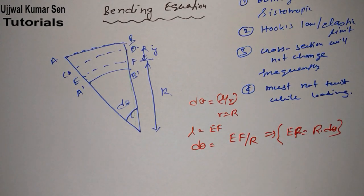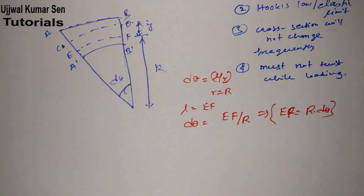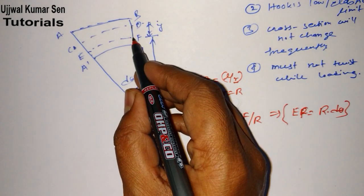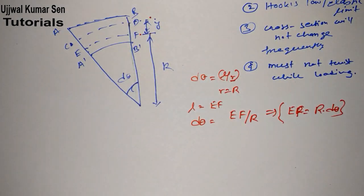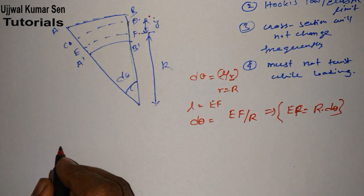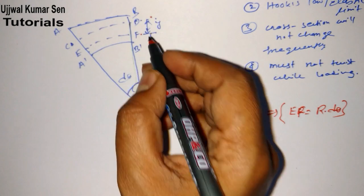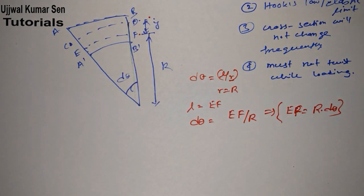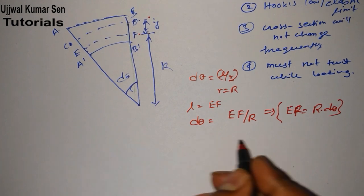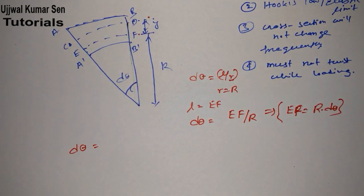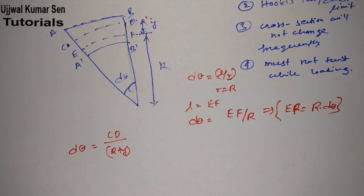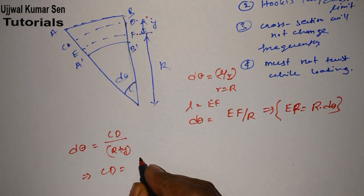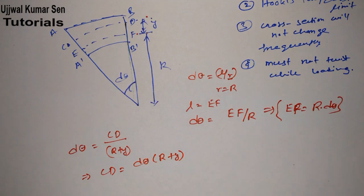So EF = R·dθ. Now, because of loading the radius is changing. For the layer CD, which is at distance y from the neutral axis, the radius becomes R + y. So dθ = CD/(R + y), which gives CD = (R + y)·dθ = R·dθ + y·dθ. This is equation two, and EF = R·dθ is equation one.